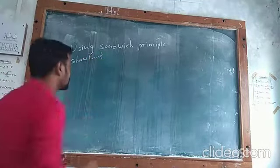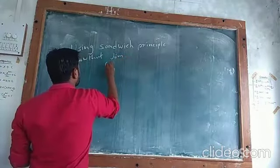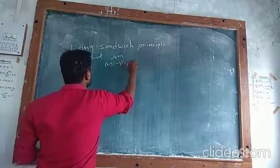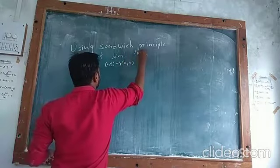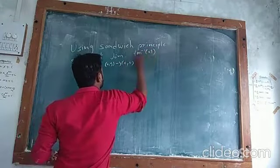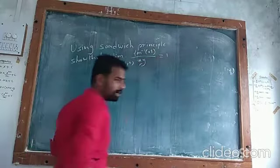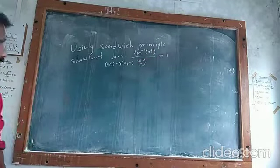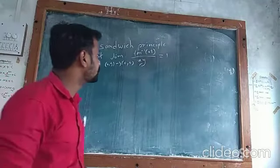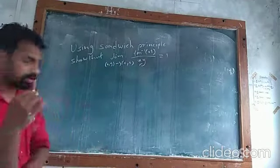Next example: using the sandwich theorem, show that the limit as (x,y) tends to (0,0) of tan⁻¹(xy) upon xy equals 1.